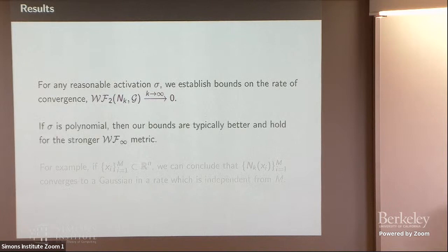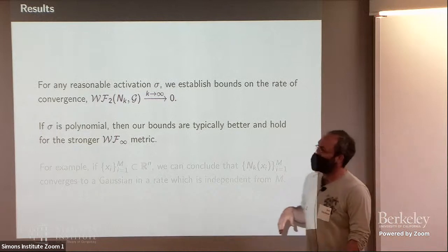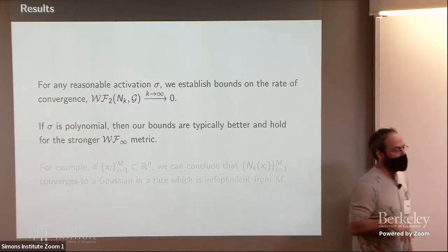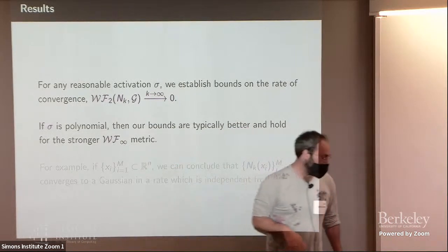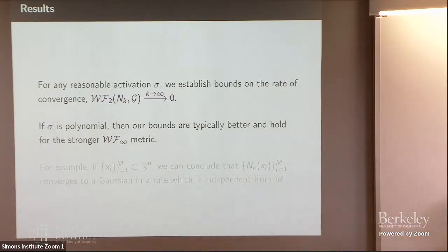Okay, so we actually have a separation in our results, and we separate between activations which are polynomial. And for this, we really obtain results with respect to the stronger metric, and activations which are general or non-polynomial, and we only obtain results with respect to the weaker metric. But we actually know now how to get results for general activations in the stronger metric, if you do not require the weights to be Gaussian.